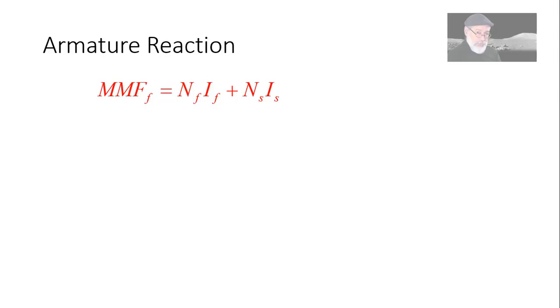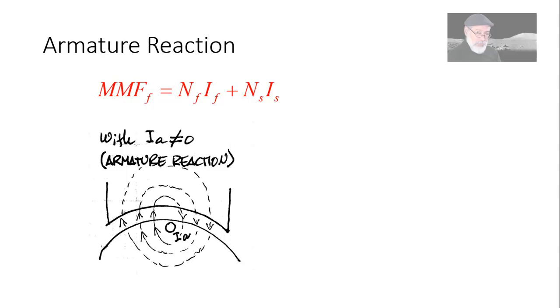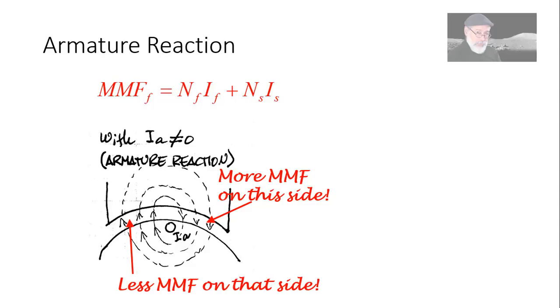But in reality there is another current in the machine whose MMF we have been ignoring. What current is that? The armature current. You see that current is trying to increase the flux on the right and trying to decrease the flux on the left.